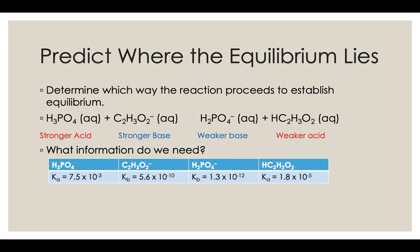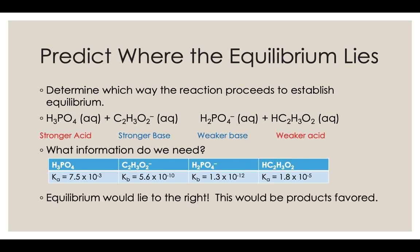Since reactions always head in the direction toward the weaker acid and base, we draw our arrow to the right — a products-favored reaction. The larger arrow points towards the products, showing that the reaction predominantly proceeds in that direction.